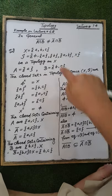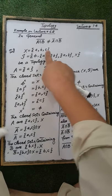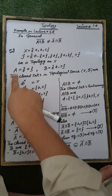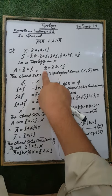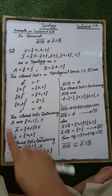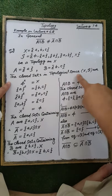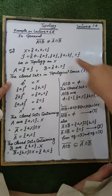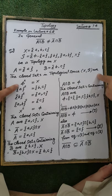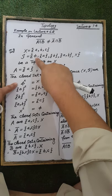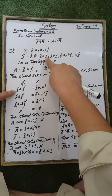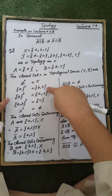let X be the ground set containing the elements A, B, C, with a topology T on the ground set X. The sets A and B are two subsets of the ground set X. The closed sets in the topological space X are: the complement of the open set phi is the ground set X, and the complement of the open set containing element A is the set containing elements B, C.